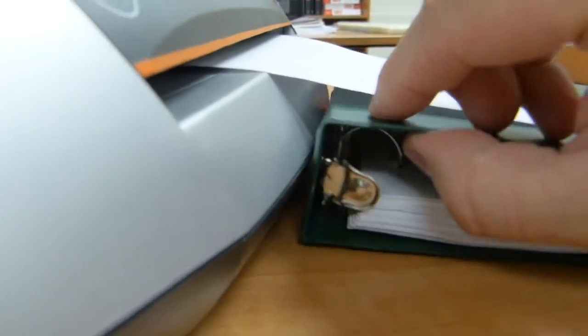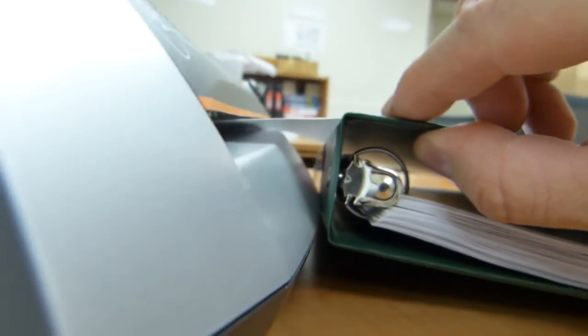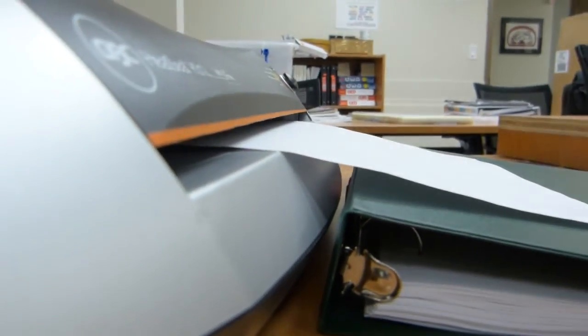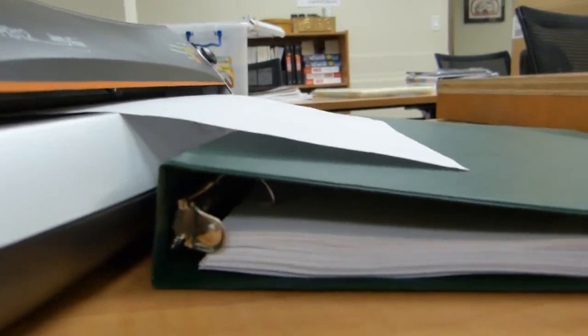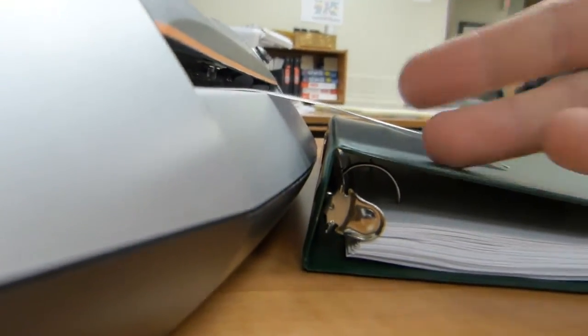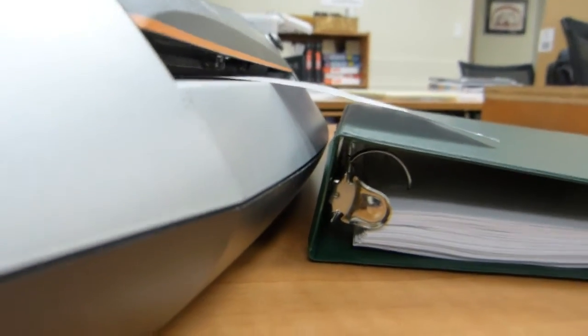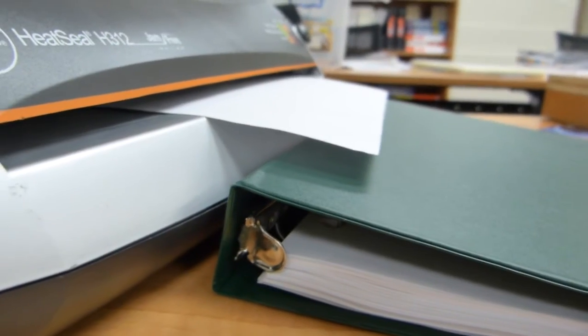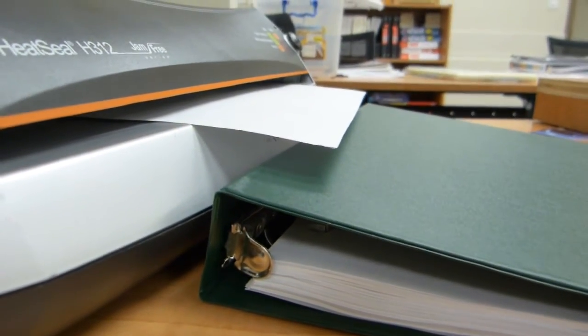They are either too thin or too thick. None of the binders have the exact thickness to match the height of this infeed table here. Even if there was one that's close enough, you see it still makes a crooked laminate. This paper is still drooping and curved, and as a result, the lamination will be crooked.